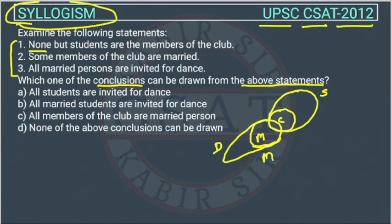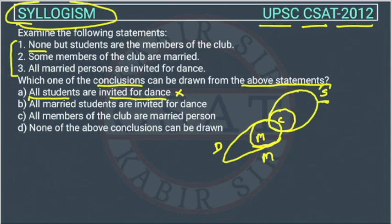Now, which conclusions can we draw? The first conclusion given is: all students are invited for dance. This is wrong. All students are not invited because students are here and the dance circle is here. These are the people who are not invited — they are not dancing.